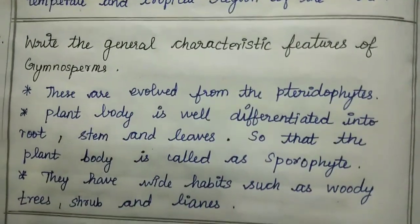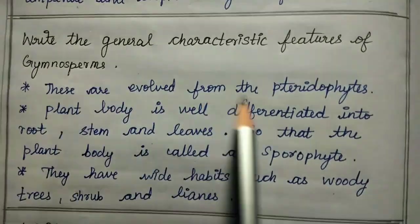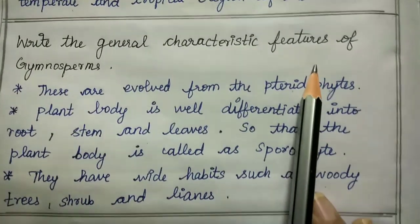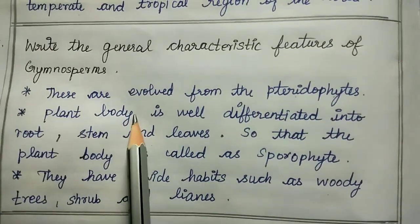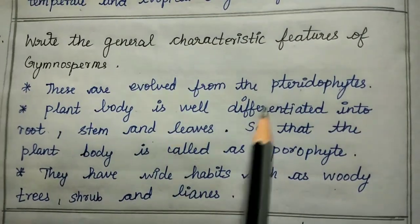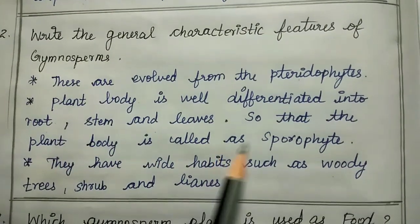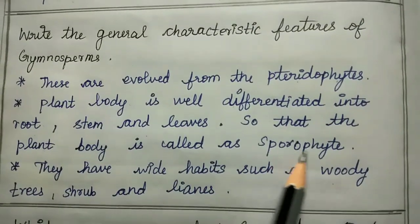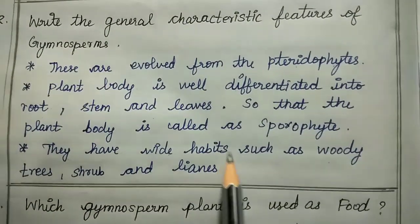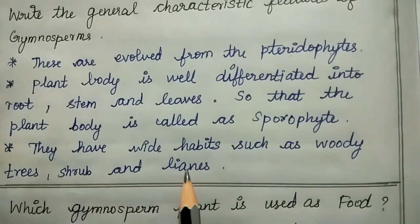Second question: write the general characteristic features of gymnosperms. They are evolved from pteridophytes. Plant body is well differentiated into root, stem, and leaves. The plant body is called sporophyte. They have various habits such as woody trees, shrubs, and lianas.